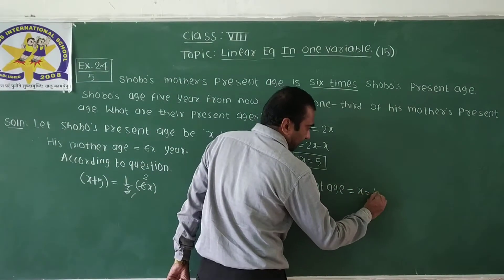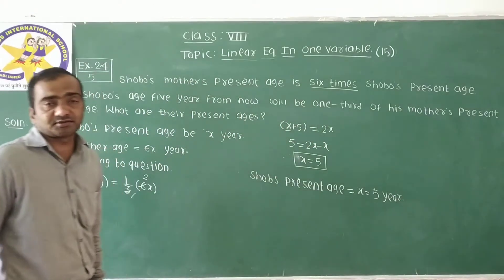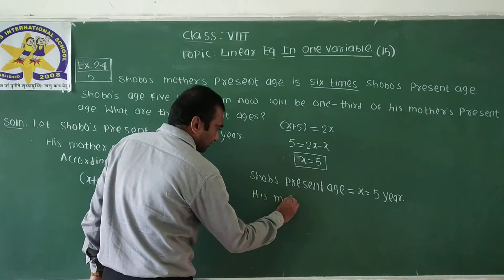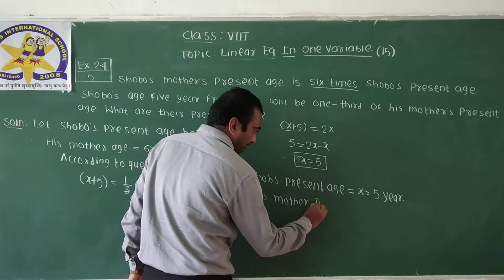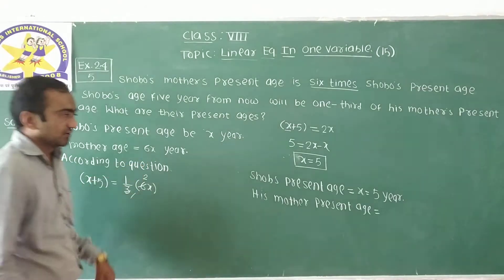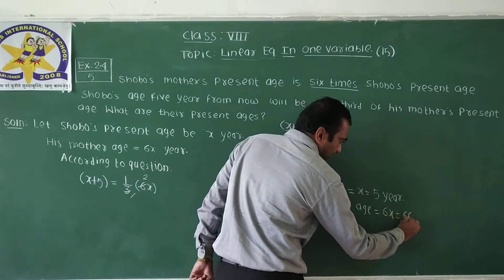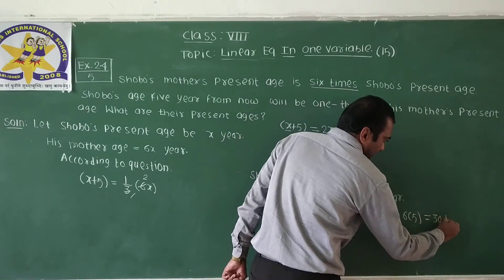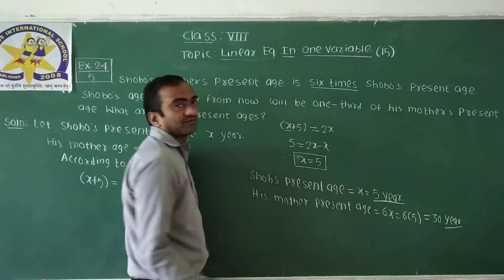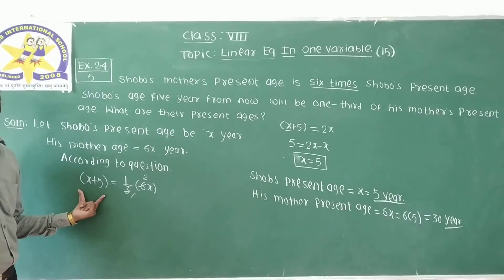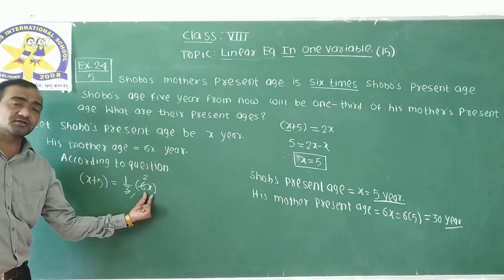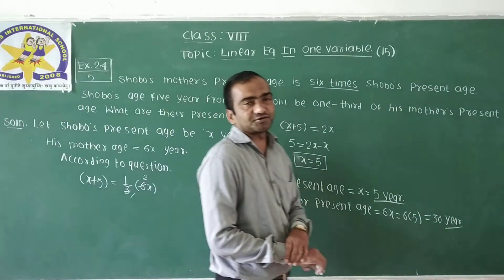The value of x is 5, so Shavod's present age is 5 years. Now his mother's present age is 6x years. Putting the value of x as 5: 6 times 5 equals 30 years, so his mother's present age is 30 years. The main condition to remember is: after 5 years, Shavod's age (x plus 5) will be one third of his mother's present age. I hope you understand.